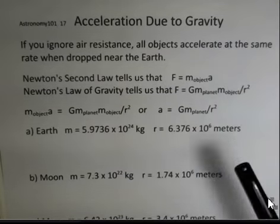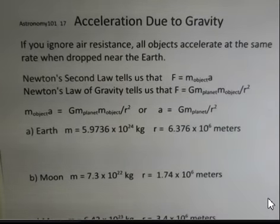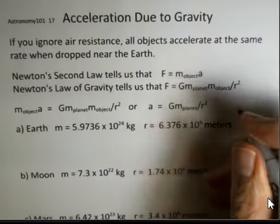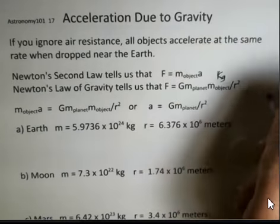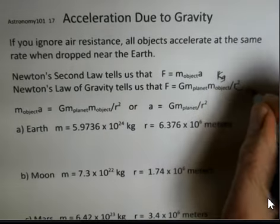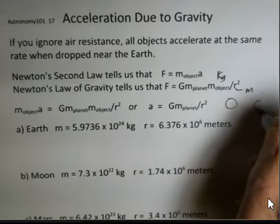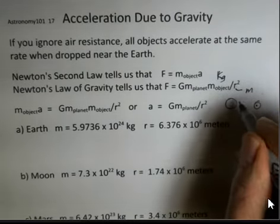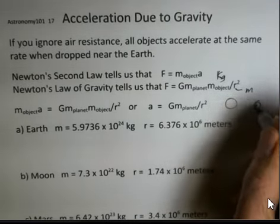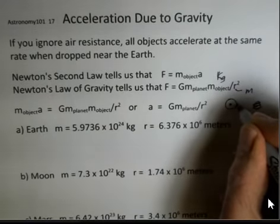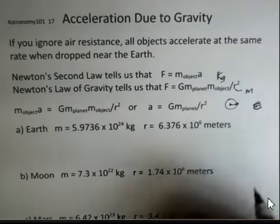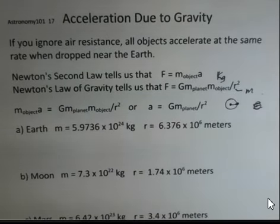The mass needs to be in kilograms and this r value is in meters. This r is the distance between the centers of the two objects. We're going from the center of the planet to the center of the object that's right on the surface of the planet.